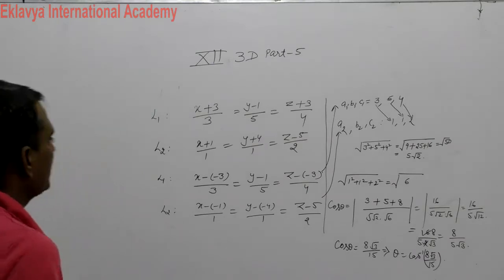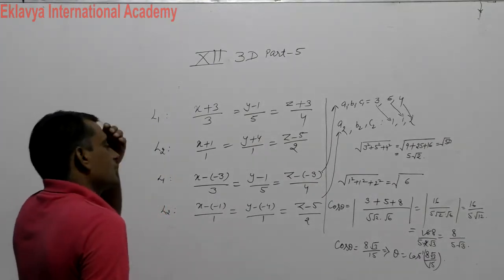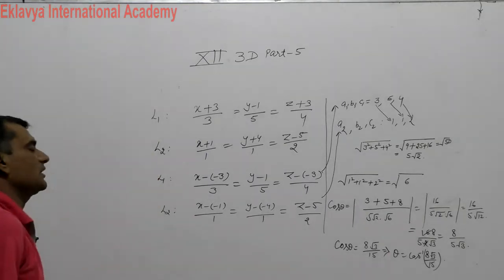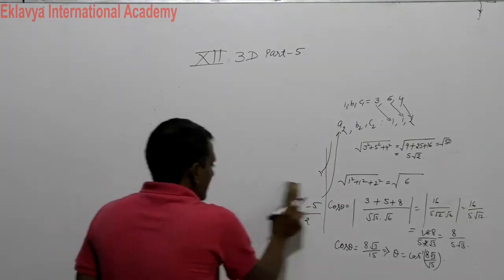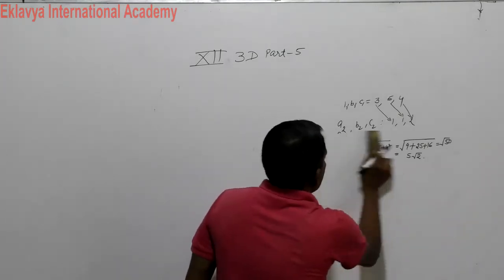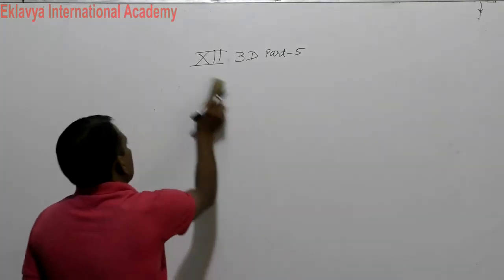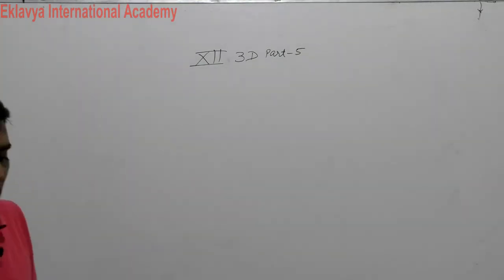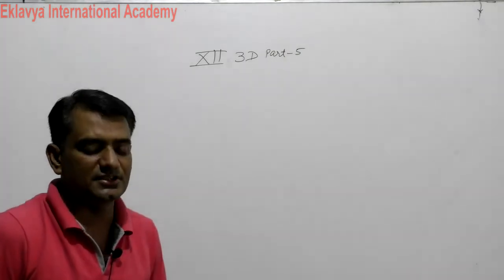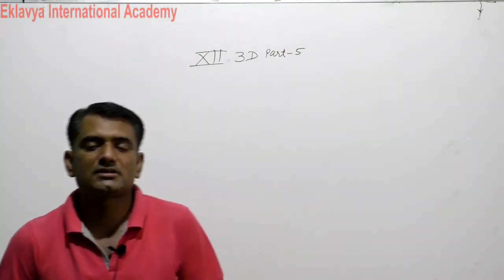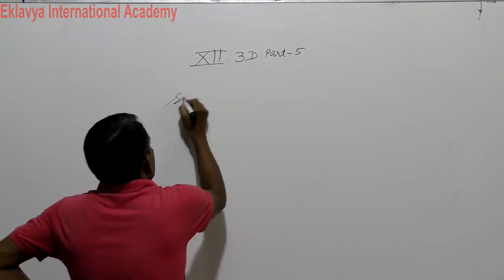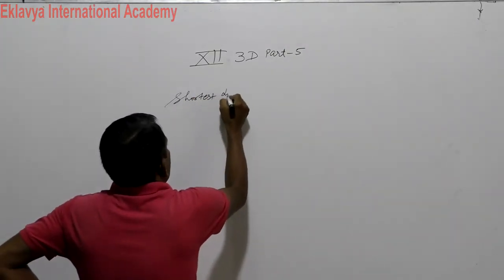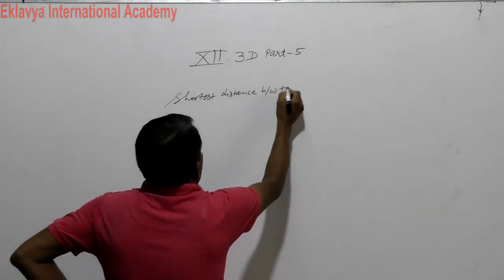So students, this content regarding the angle between two lines is noted. This content will be considered as part of study but not as part of examination. Now the next part is shortest distance between two lines.